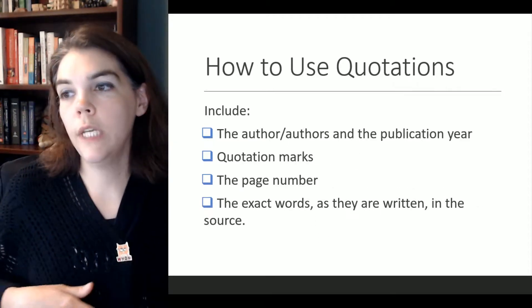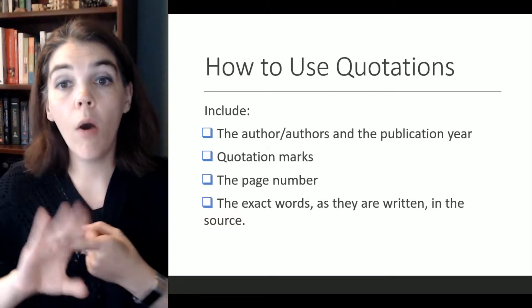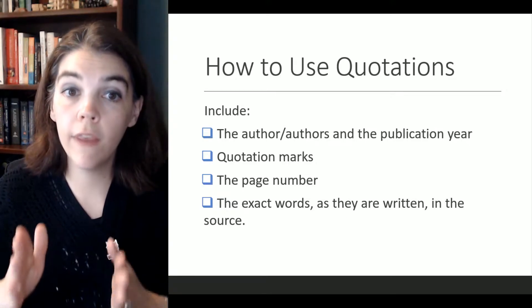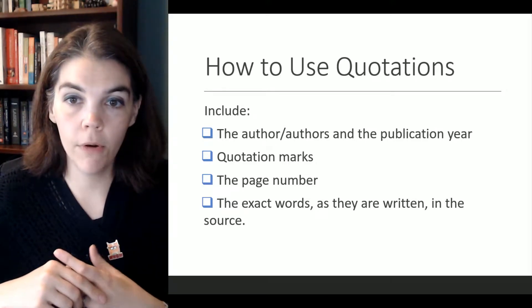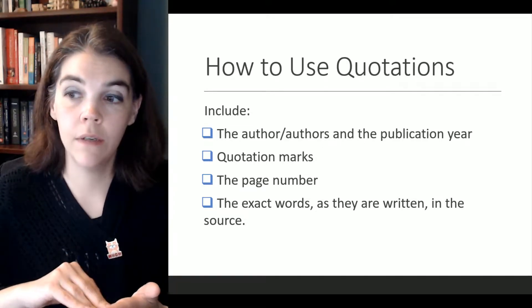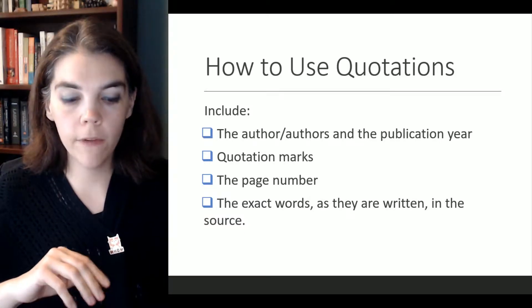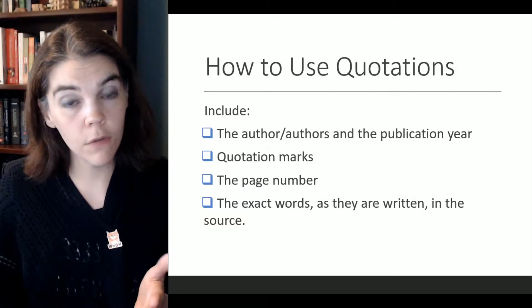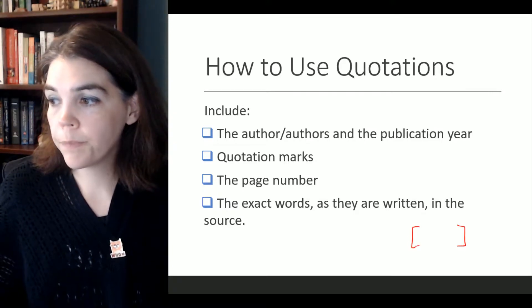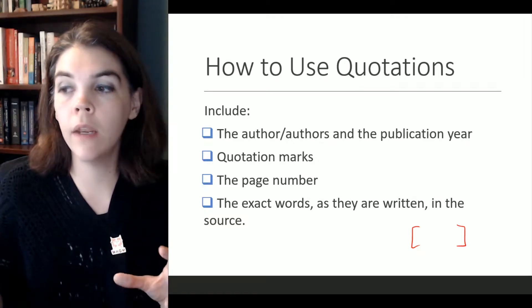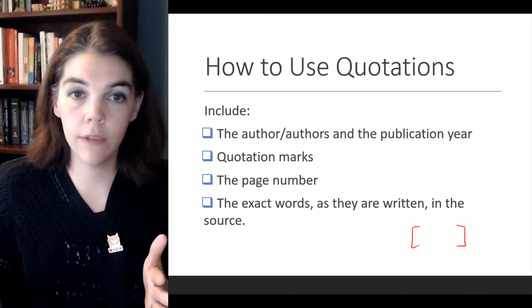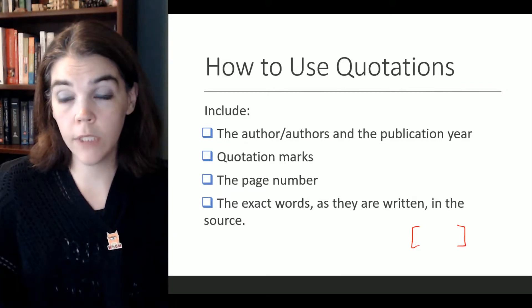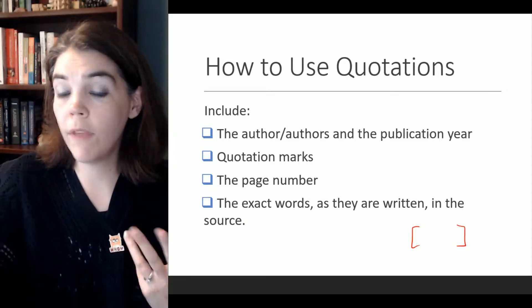So how do you use quotations? There are a few things that you need. You need the author or the authors and the publication year. You need to use quotation marks so we know that these are the exact words that they said. You need a page number and of course the exact words as they are written in the source. I will mention at this point that if you need to change the words like a pronoun so that the sentence flows better, you use brackets. We'll leave that for another time today. I'll just focus on put them in quotation marks and have it read exactly the same.